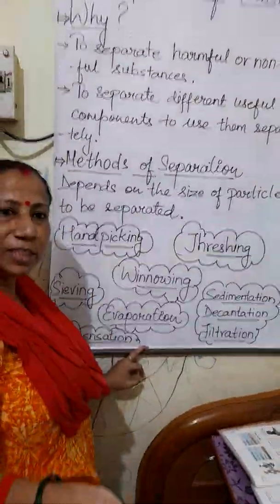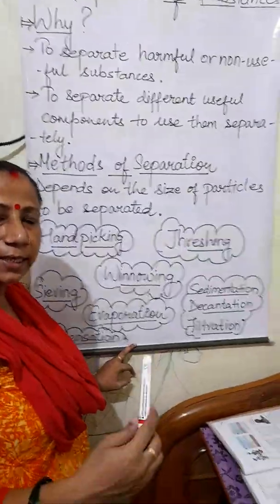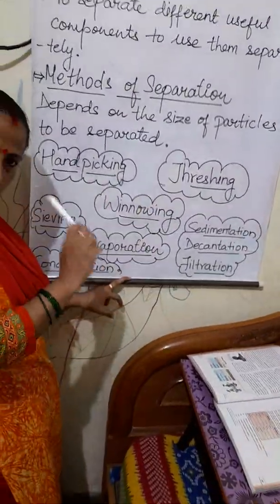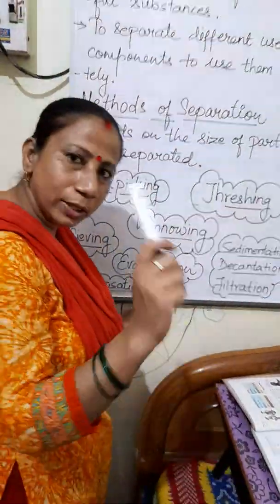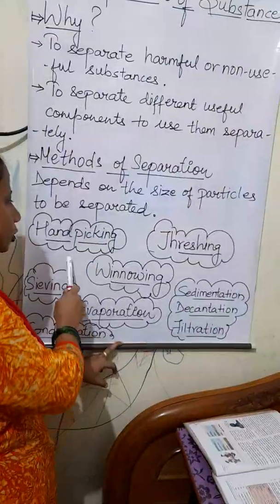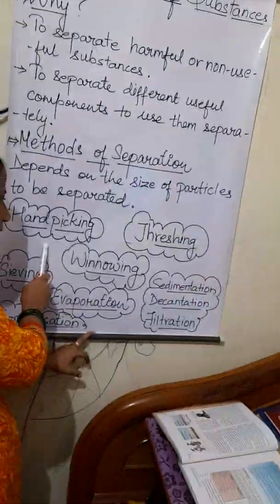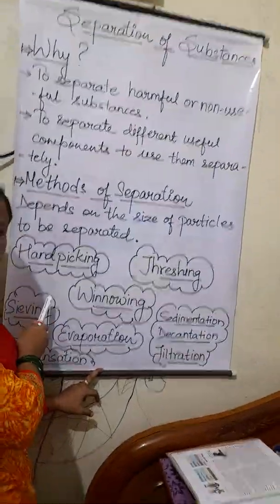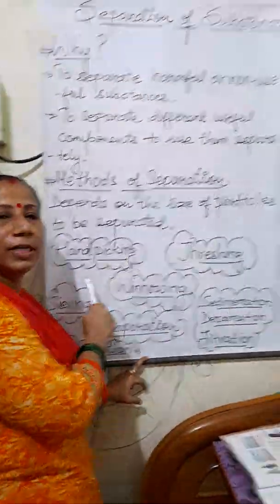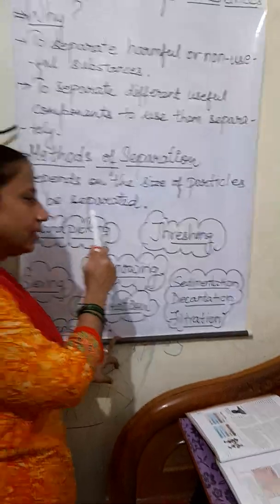I will describe the methods in detail in the next video. Today I will tell you only the names. The first process is hand picking — as the name indicates, in this method the impurities are picked up by hand.